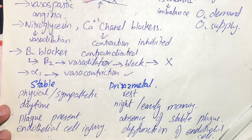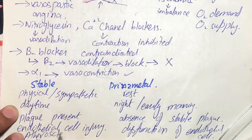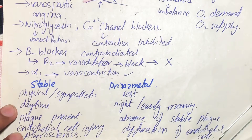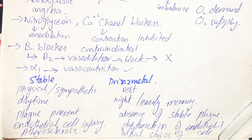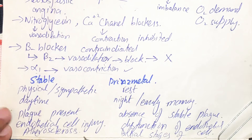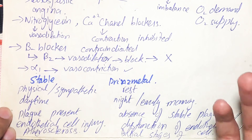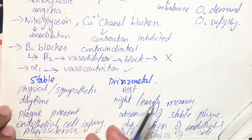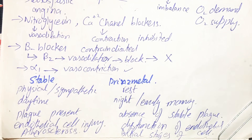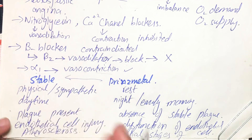Another difference is that stable angina involves presence of atherosclerosis, whereas Prinzmetal angina is only at the initial stages of atherosclerosis. Prinzmetal angina can definitely proceed to atherosclerosis, but atherosclerosis is not the cause — the cause is dysfunction of endothelial cells causing vasospasm or vasoconstriction. So Prinzmetal angina can lead toward stable angina in the long run, but they are not the same condition.